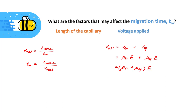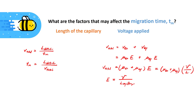The electric field is equal to the voltage applied over the length of the capillary. As a result, we know that the total migration rate will be equal to the sum of the electro-osmotic mobility and the electrophoretic mobility, multiplied by the voltage applied over the length. Substituting this equation into the migration time equation, we should be able to get the following relationship.